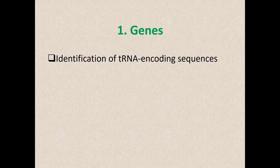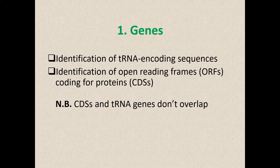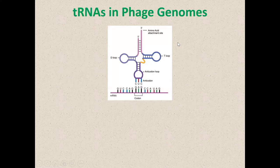For the first part, I'm going to deal with genes. There are two types of genes you'll find in phages: the common ones, which are transfer RNA encoding sequences, and a subset of ORFs referred to as CDSs or coding sequences, which encode for proteins. These don't overlap with one another. If you find a CDS with a tRNA in the middle of it, it probably doesn't exist. That said, Mother Nature continually throws curves at us, and exceptions to rules are always present, particularly with phages.